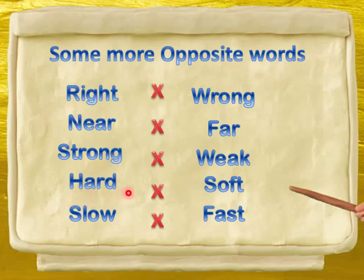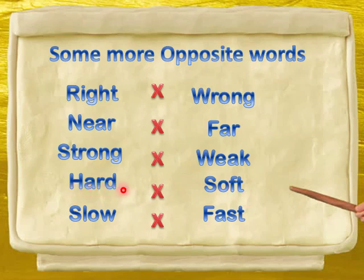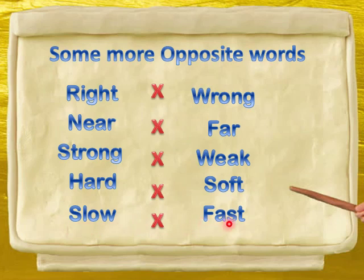Hard — मतलब सख्त. Hard means सख्त. और soft means नाजुक. सख्त और ये क्या है? नाजुक. Hard and soft. Slow. Slow का opposite है fast.